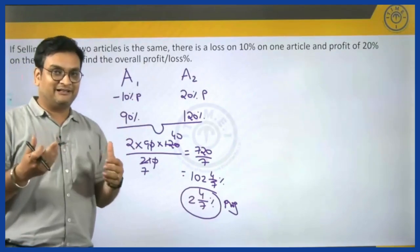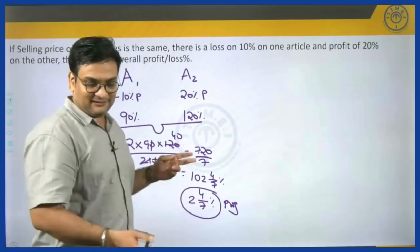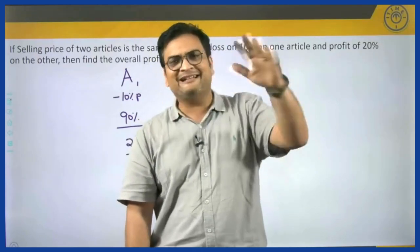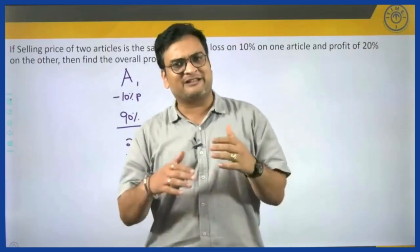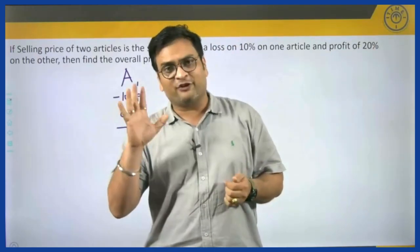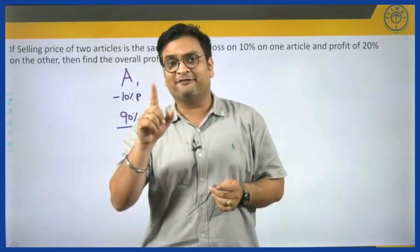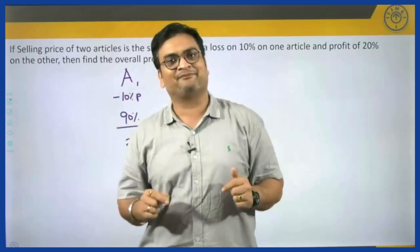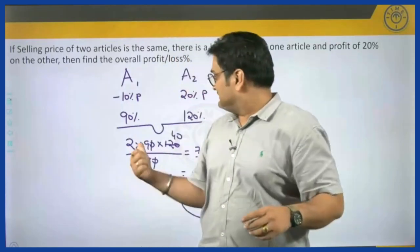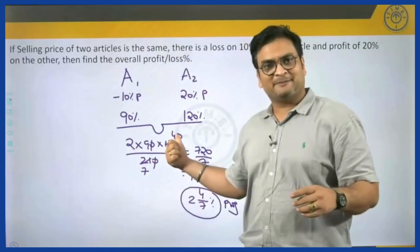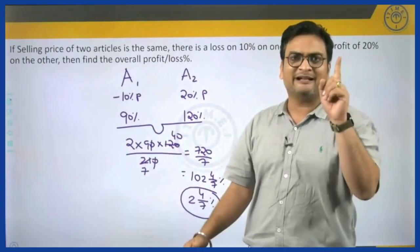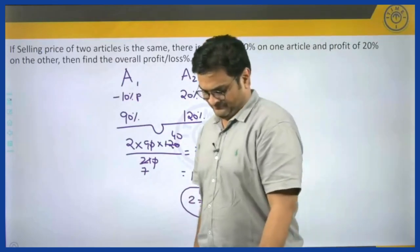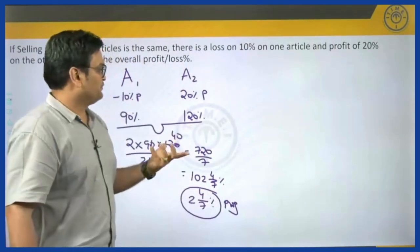So there are no detailed calculations needed with this method. To summarize: Method 1 was very detailed with much calculation. Method 2 used the formula A squared by 100, but that only works when A is the same and selling prices are the same. Method 3, the harmonic mean approach, works in all kinds of questions — the only condition is that the selling prices should be the same.